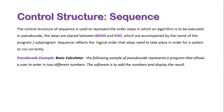Let's look at an example first in pseudocode. This is going to be a basic calculator. The following sample of pseudocode represents a program that allows the user to enter in two different numbers; the software is to add these numbers together and display the result. The first thing we have is the begin keyword followed by the name of the program.